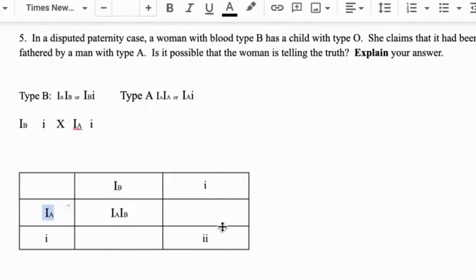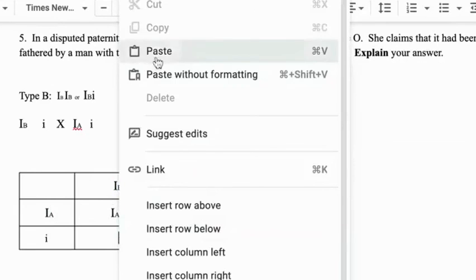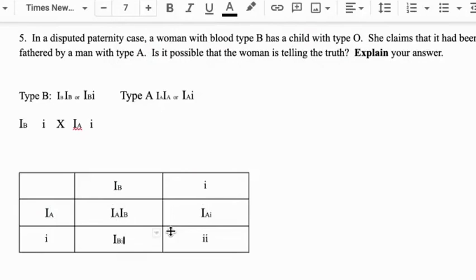They could actually have all four blood types. It's just kind of crazy because this would be the I^A and i, right? So they could have a baby that's AB, they could have a baby that's A, they could have a baby that's B, and they could have a baby that's O if they're both heterozygous. So yeah, it's possible.